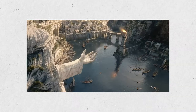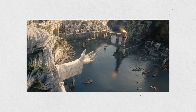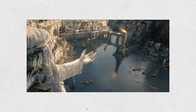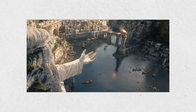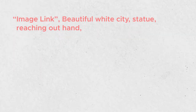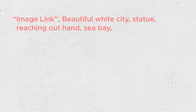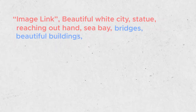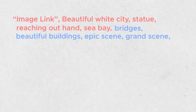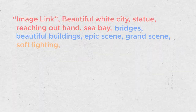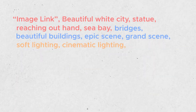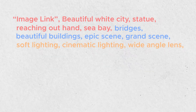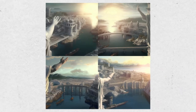I'll use this image of Numenor to create my own scene. I'll copy the address and add my prompt to it. I will describe the main things I want to see: Beautiful white city, statue, reaching out hand, sea bay, bridges, beautiful buildings, epic scene, grand scene, soft lighting, cinematic lighting, wide-angle lens, V4. And I get this.